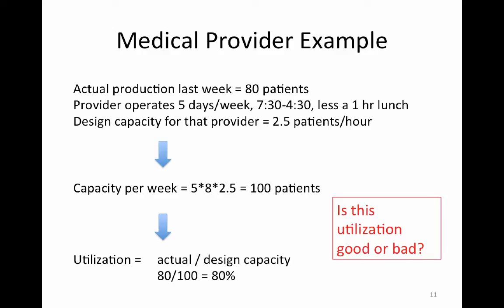Here's a medical provider example. Production was 80 patients. The provider operates five days a week, nine hours a day with a one-hour lunch, leaving eight hours. The designed capacity is two and a half patients per hour based on historical production. Capacity per week: 5 days × 8 hours × 2.5 patients/hour = 100 patients. However, the provider only saw 80 patients last week, so actual demand divided by capacity gives 80% utilization.